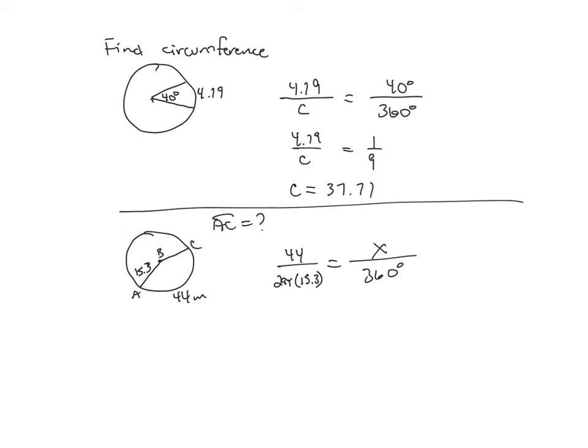So on this one, I don't know the arc measure. I know 360, I know the arc length is 44. And then I have 2π, and then the radius is 15.3. So I'd want to get this one 15.3 times 2. So this one's a little bit more messy with the solving because we can't reduce the like degree part. So I'm going to get 30.6πx multiplying diagonals. And then 360 times 44 is 15,840. And then I'm going to divide by 30.6π.